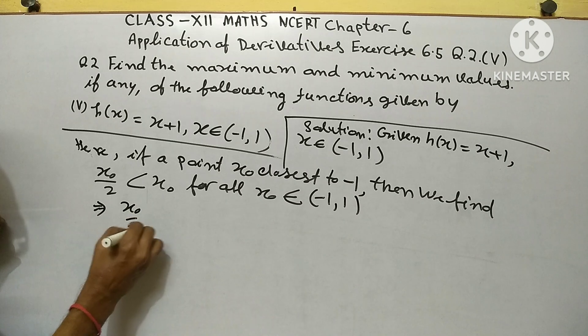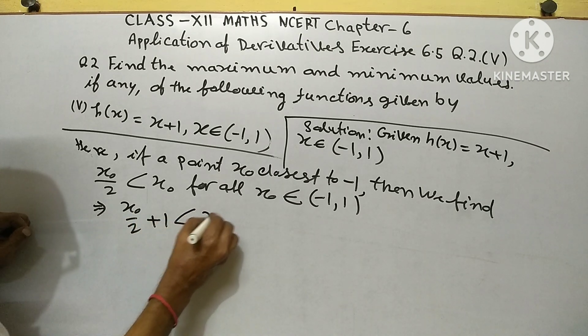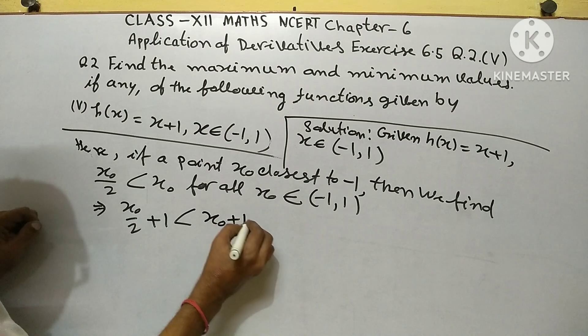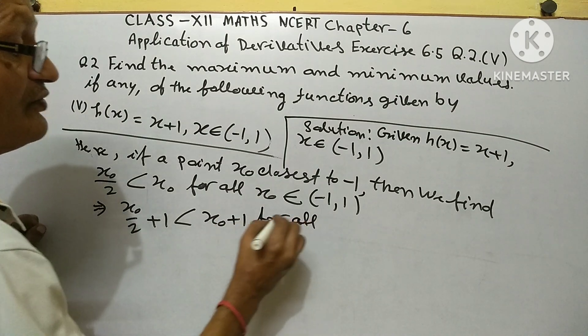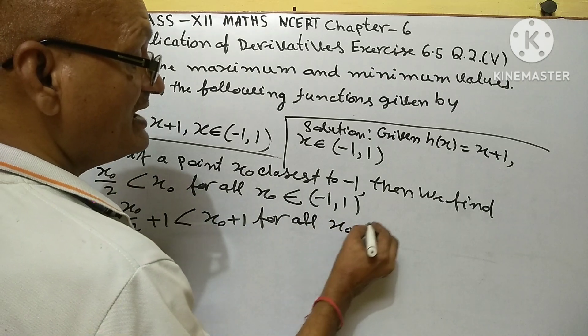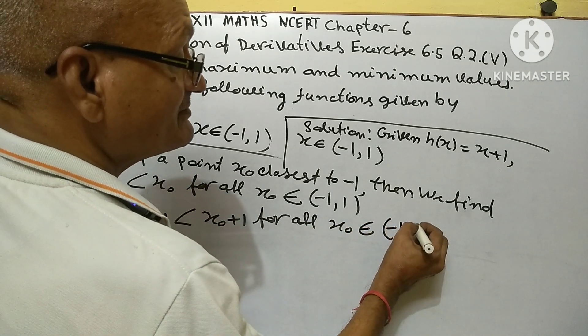This implies x_0 over 2 plus 1 is less than x_0 plus 1, for all x_0 belonging to the interval minus 1, 1.